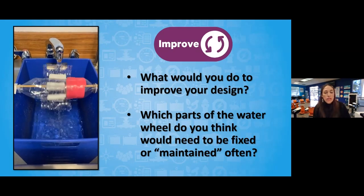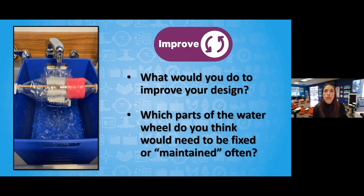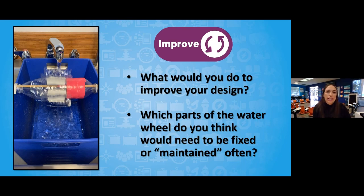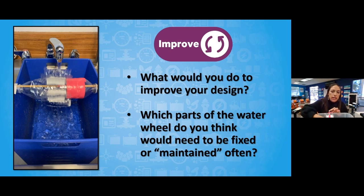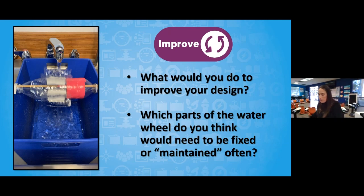As you see my design, I'm sure you've seen lots of different types of water wheels. What would be some things you would do to improve your design? These water wheels can be connected to other types of equipment — it could be used to lift something, or moved with a gear to turn something. Also, as a plant maintenance technician, which parts of the water wheel do you think would need to be fixed or maintained often? If you're putting this underwater several times, these paper straws aren't going to last long — so do the blades need to be changed? There are lots of different things to consider.